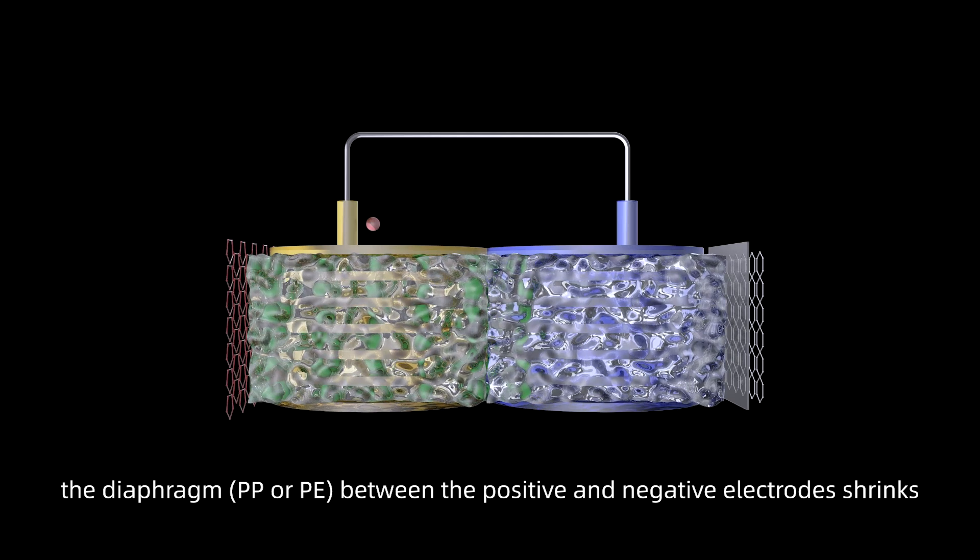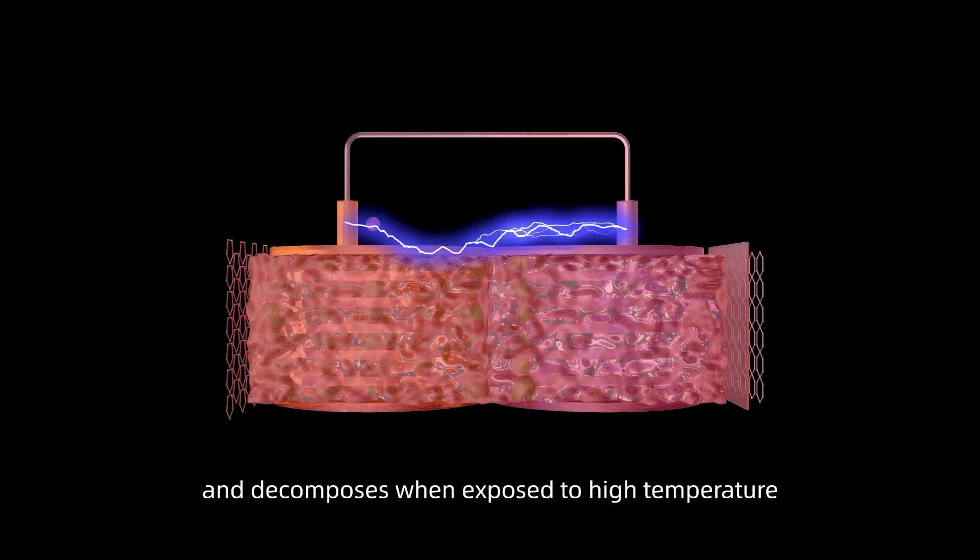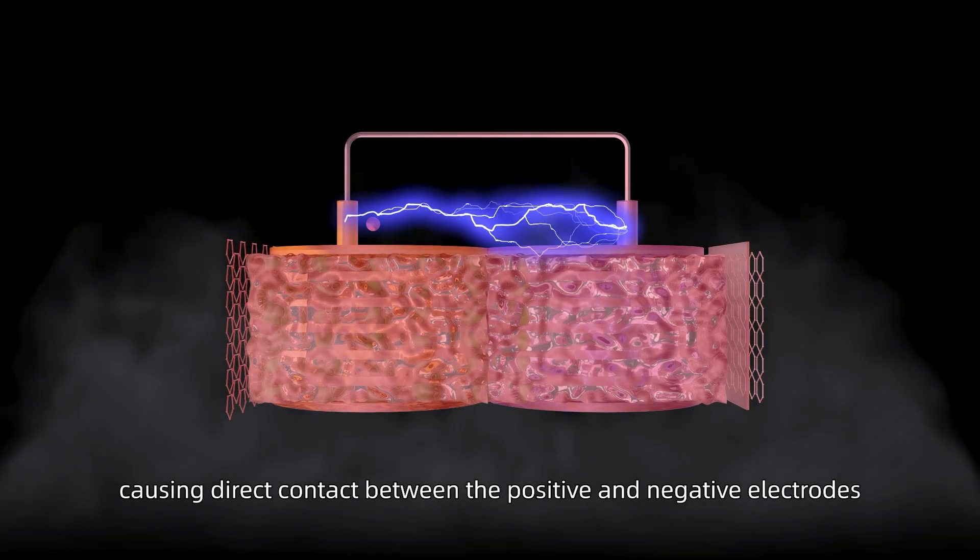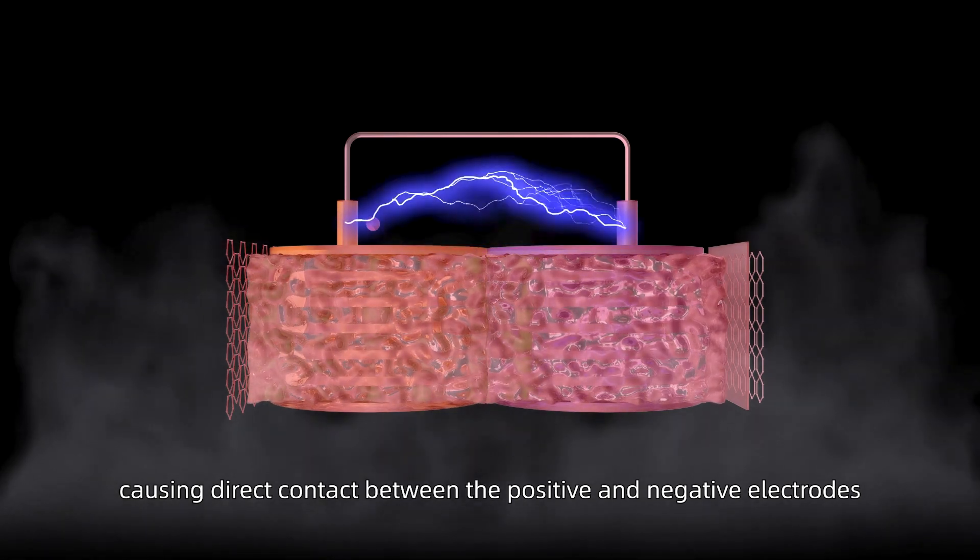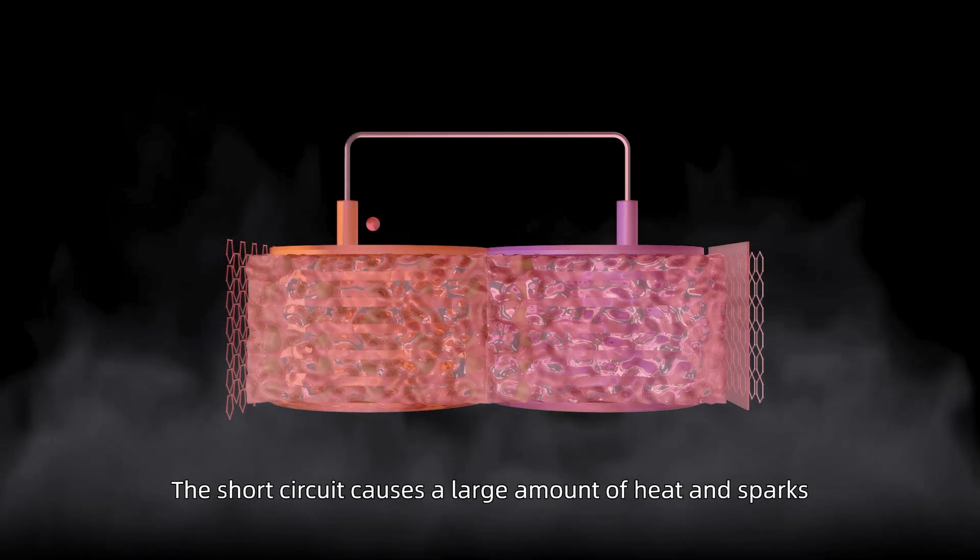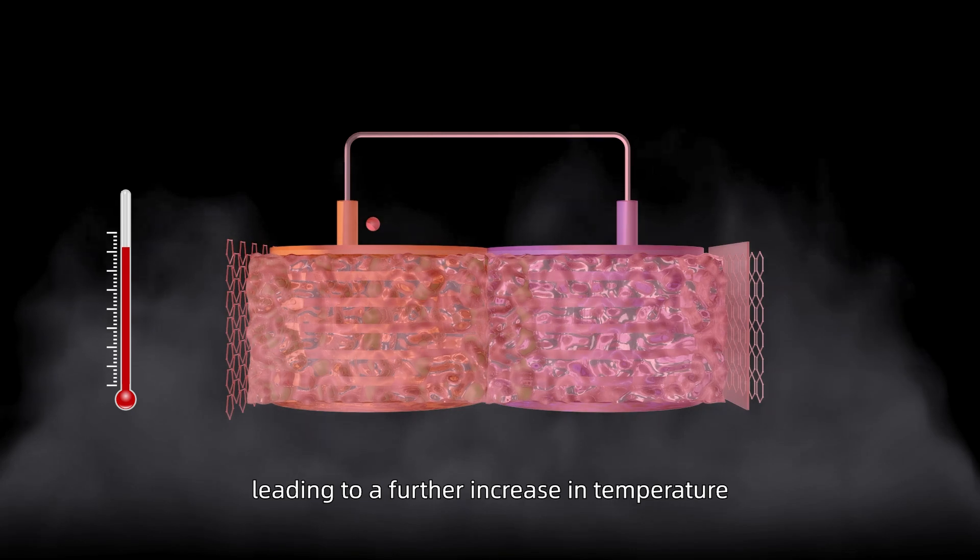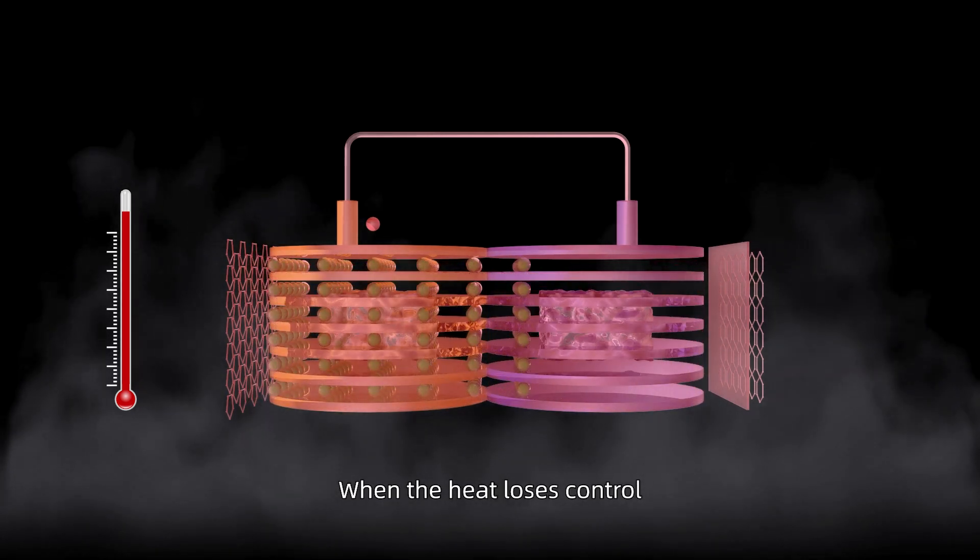After the temperature rises again, the diaphragm between the positive and negative electrodes shrinks and decomposes when exposed to high temperature, causing direct contact between the positive and negative electrodes. The short circuit causes a large amount of heat and sparks, leading to a further increase in temperature.